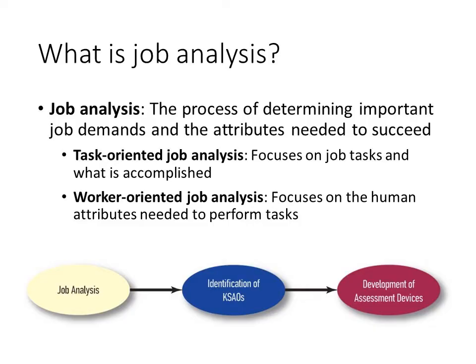There are two basic types of job analysis. We have task-oriented job analysis, which is really focused on the what of the job — what someone does in that position, the tasks, the activities, the responsibilities of the job incumbents. Worker-oriented job analysis is more focused on the KSAOs, on the human qualities that are required to meet the demands of the job. Most of the time, we try to find a balance and measure both, but sometimes the goals of the project will lead us to focus on one aspect more than the other.